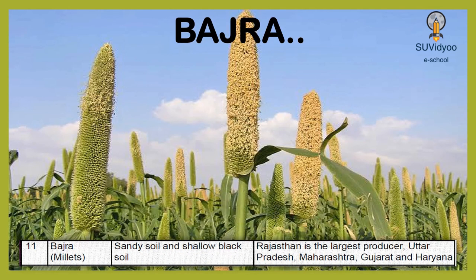Bajra is another millet. It grows well on sandy soil and shallow black soil. Rajasthan is the largest producer of Bajra, followed by Uttar Pradesh, Maharashtra, Gujarat and Haryana.